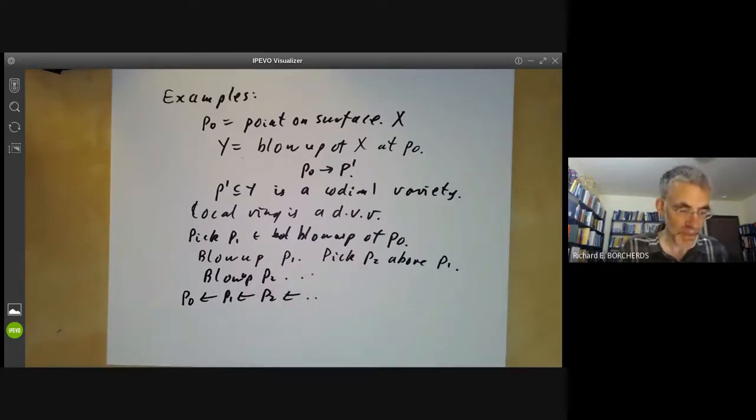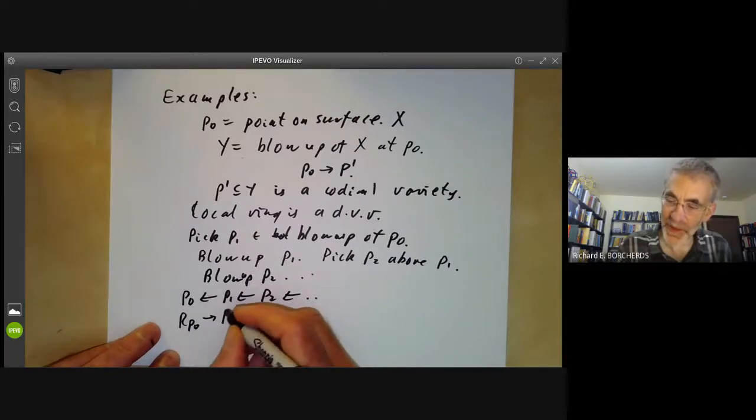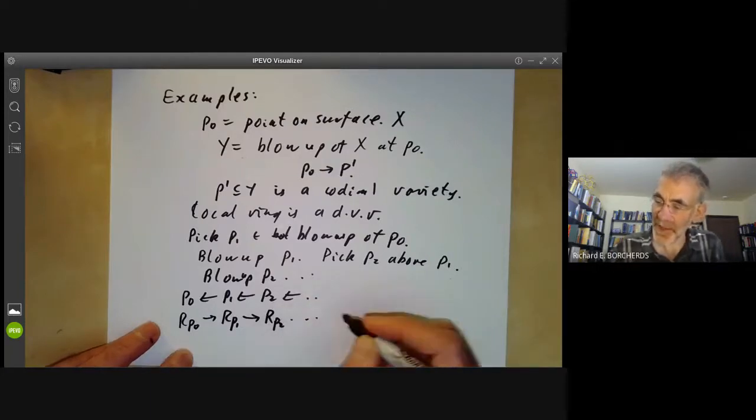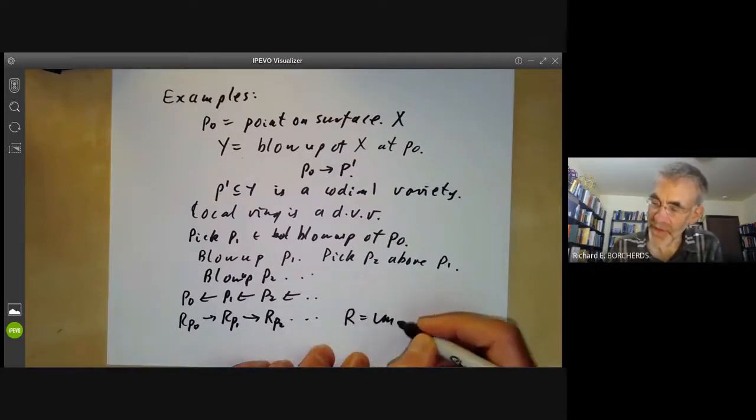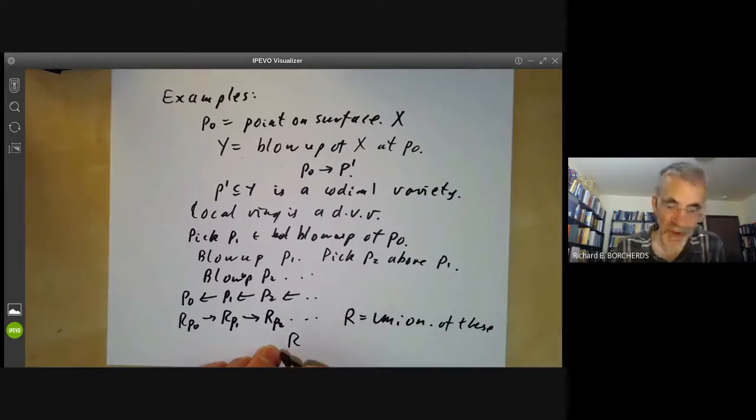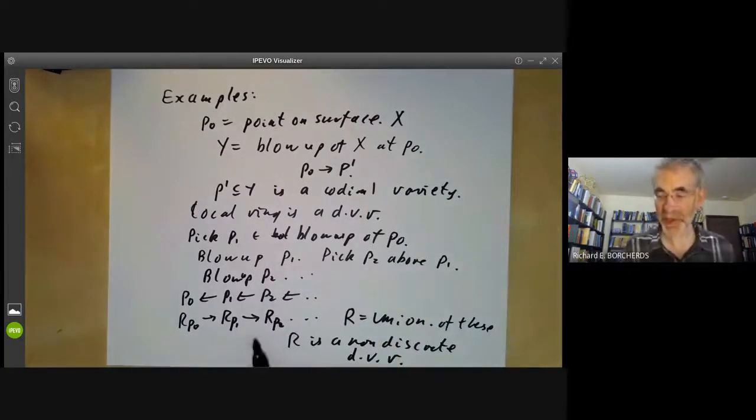And then we can look at the local ring at P_0, R_P0. And this is a map to the local ring R_P1 at P1, and this is a map to the local ring R_P2 at P2. And if we take R to be the union of these, then R gives an example of a non-discrete valuation ring. Well, as you see from this construction, non-discrete valuation rings are kind of hairy. You tend to get these rather bizarre infinite constructions in order to get them.